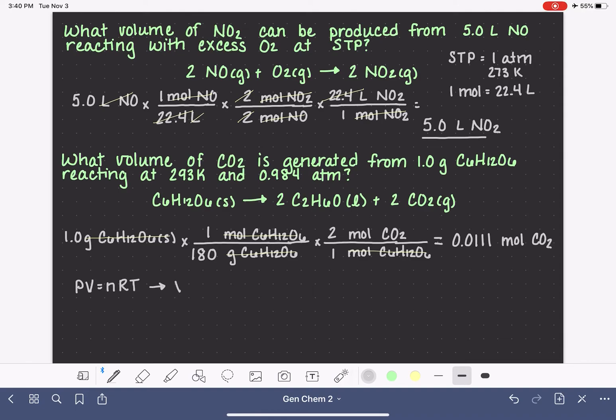Specifically, in this case, because we're trying to solve for volume, we want nRT over P. And we have determined the number of moles of CO2. So we can plug that in, 0.0111 moles. We know the ideal gas constant, 0.08206 liters atmospheres per mole Kelvin.